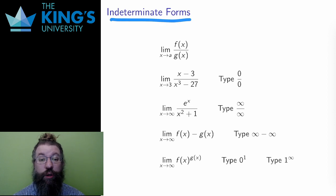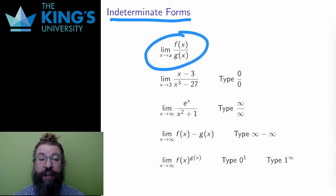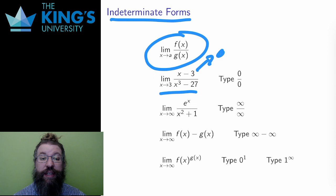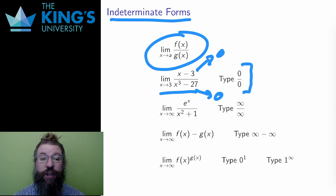Indeterminate forms arose by asking what parts of a limit are doing in order to better understand the whole. Last week's examples were limits of fractions. Say I have the limit of x minus 3 over x cubed minus 27 as x approaches 3. The numerator gets closer and closer to 0, and likewise the denominator also approaches 0. I label this an indeterminate form of type 0 over 0, since both numerator and denominator approach 0.